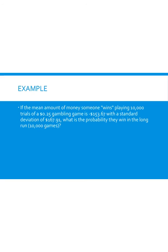So last question here: If the mean amount of money someone wins playing 10,000 trials of a $0.25 gambling game is -$153.67 with a standard deviation of $167.91, what is the probability they win in the long run? So here what we have done is we've played a whole bunch of discrete games. Okay, so we have played - we played one game, then we played a second, we put another quarter in and another and bet another quarter and bet another quarter, and on and on and on. So that's actually a discrete number of games, but this is a situation where the discrete then gets represented as continuous.